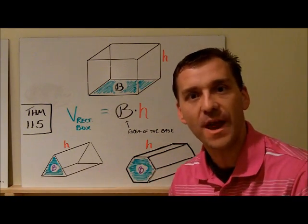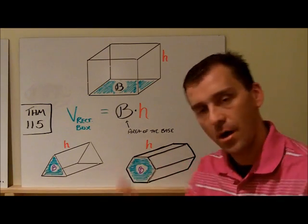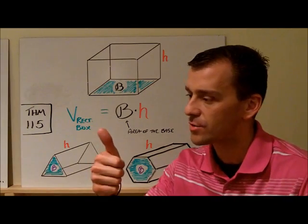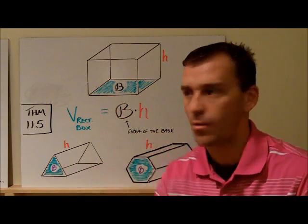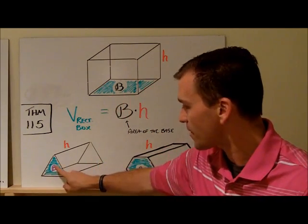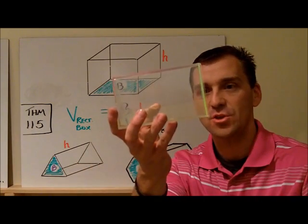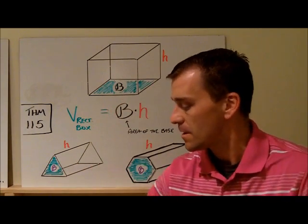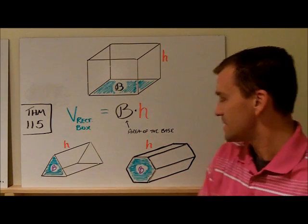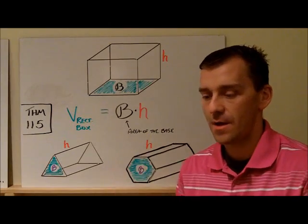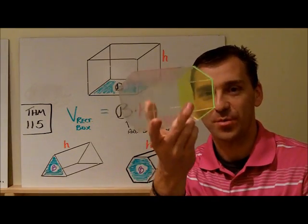You might need to go back and look at the area formula for a regular hexagon, or a triangle, equilateral triangle, isosceles triangle, or right triangle. Find the area of that base, take it times the height, and you'll find how many cubic units you can put in this.